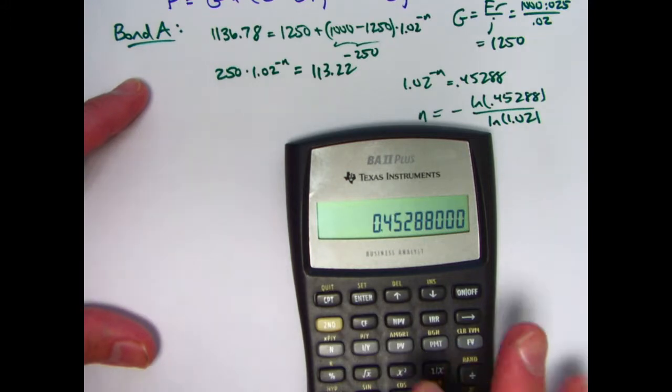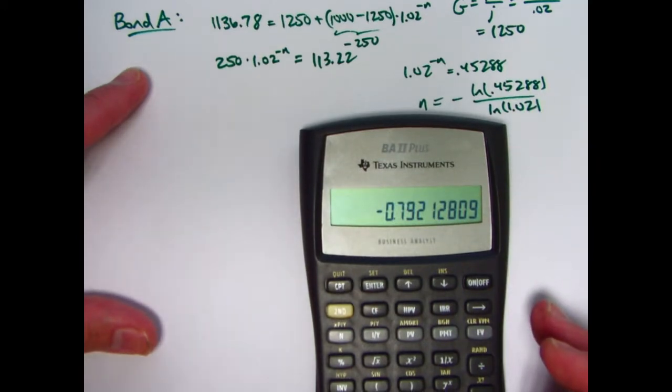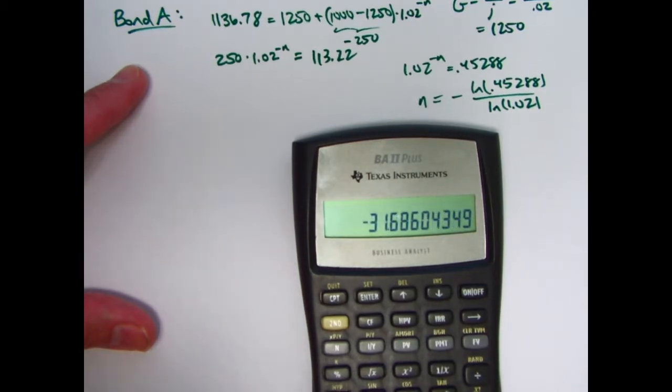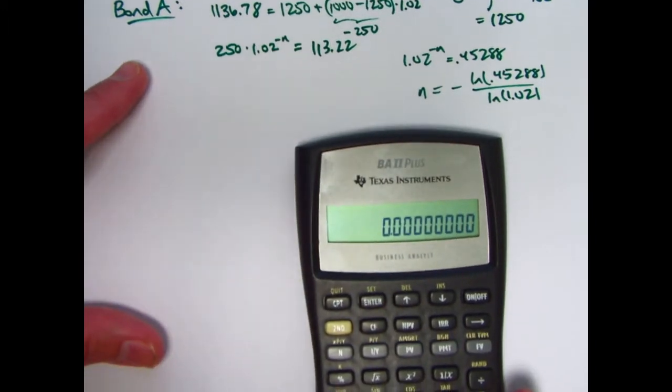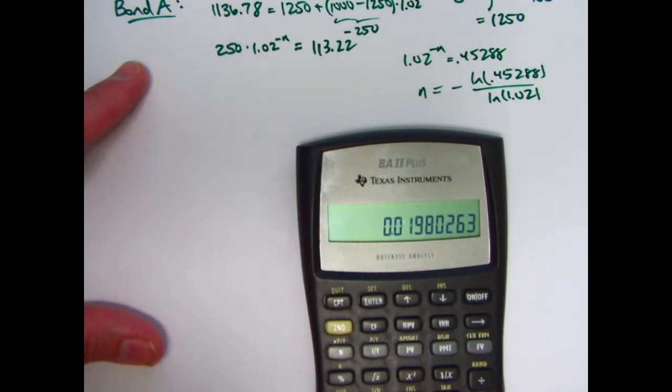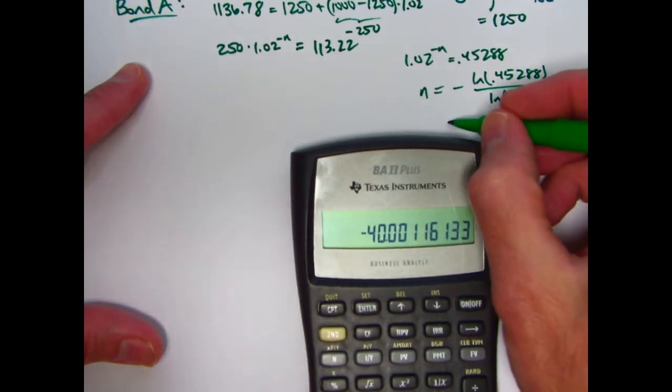Let's take the natural log of this thing, hit my ln button here. That's the natural log of 0.45288. Multiply it by negative 1. Well, we'll just negate it here. Let's store that in register 0. Natural log of 1.02 is this. Take its reciprocal times what's in register 0. Oops, I think I made a mistake there. n supposed to come out to be 40. Let's do 1.02 natural log, store that in register 0. 0.45288 natural log, divide by what's in register 0, negate that, n is coming out to be 40.